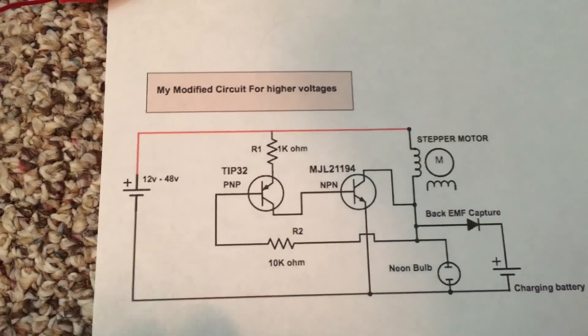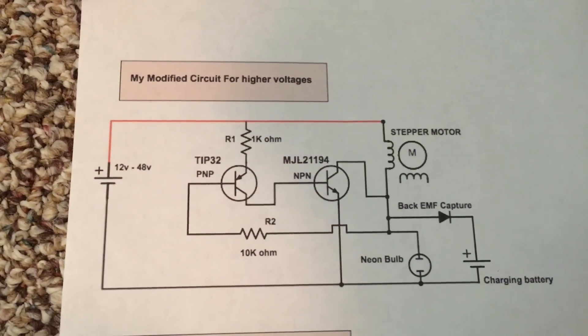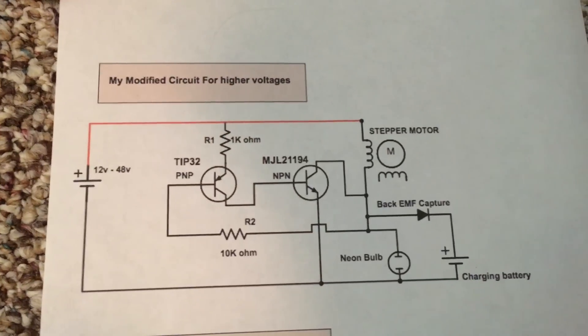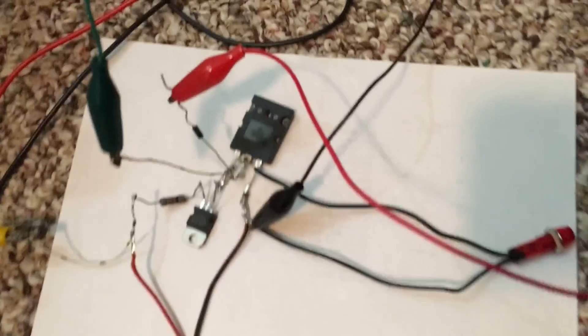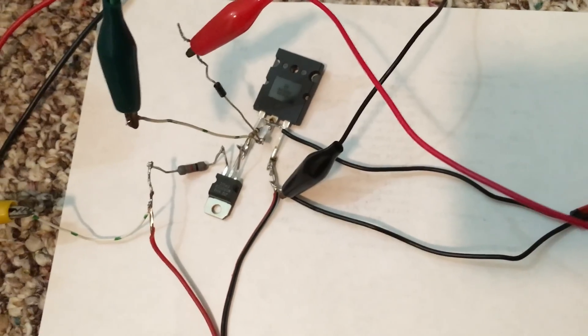I upgraded my transistors to a TIP 32 that's rated for 100 volts, and then this MJL is one that I just had laying around and it's rated for high voltage, high amperage as well. I'm going to show you what kind of results I have now. There's the little circuit all wired up, it's kind of ugly but it's functional.